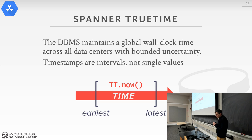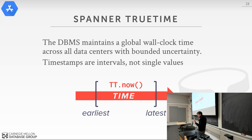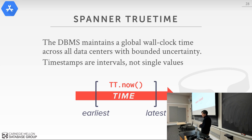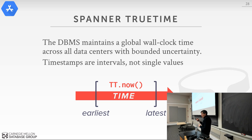TrueTime is a service API internal to Google that Spanner invokes to get the current time, synchronized based on the atomic clocks and GPS hardware devices. Uniquely, instead of getting a single timestamp value, you get a range — an interval representing the uncertainty in the current time.